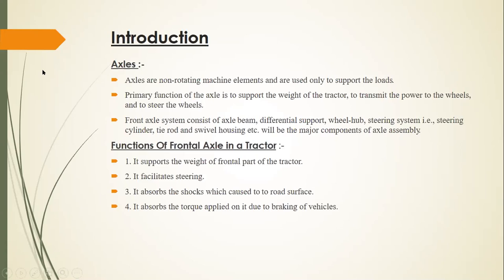The frontal axle system consists of the axle beam, tuner support, differential support, wheel hub, steering system, steering cylinder, and tie rod. Its functions include supporting the weight of the tractor, facilitating steering, absorbing shocks from road bumps, and absorbing forces during braking conditions.